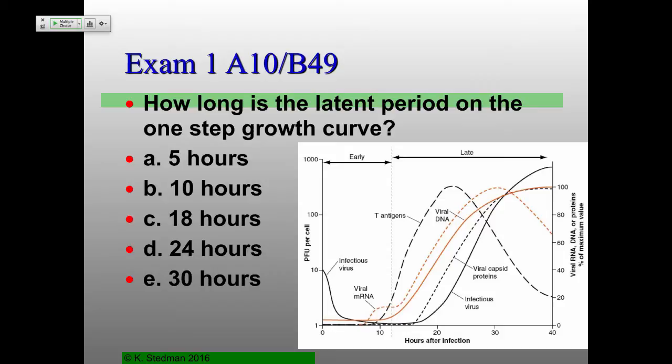Latent is basically no viruses detectable. So where do we actually start to see virus? It's the black infectious virus line — when does that start to get away from one? About 18 hours. Is that clear to people? I was surprised; maybe I did a really crummy job of explaining this.